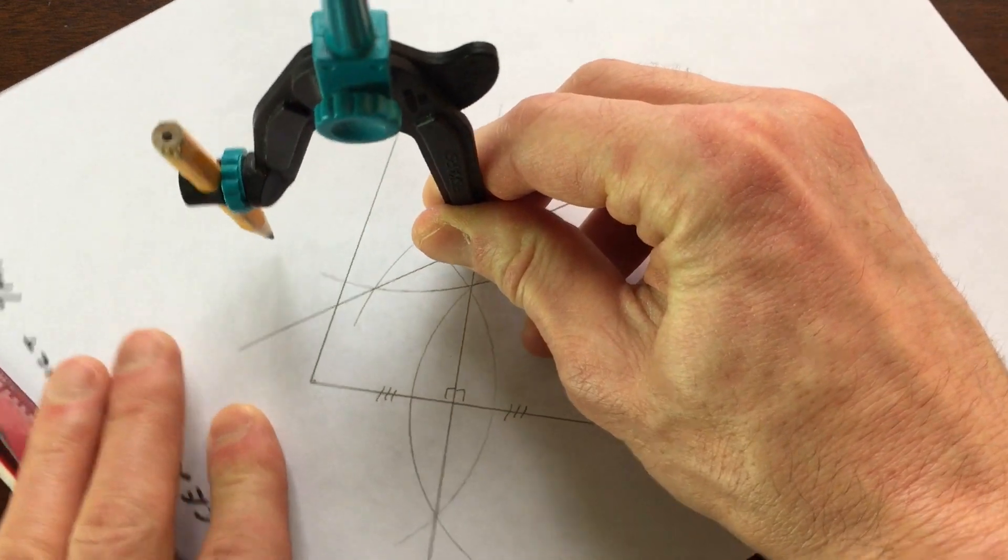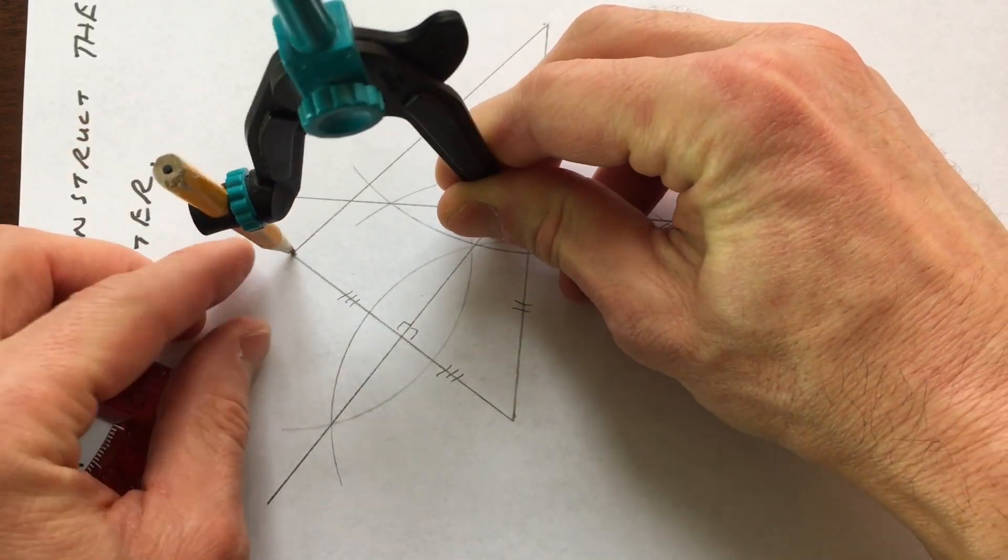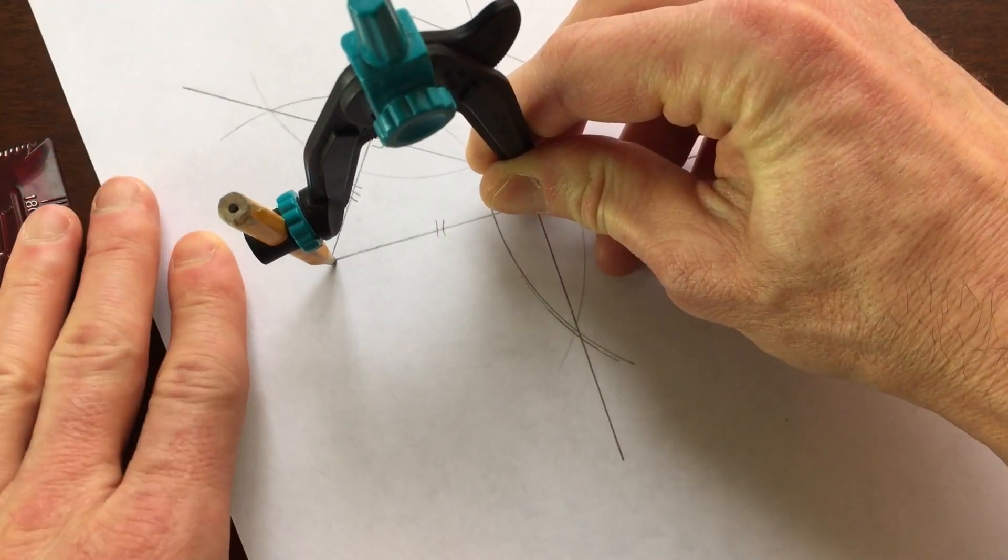And what you'll notice is that the distance to each of the vertices of the triangle is going to be the same.